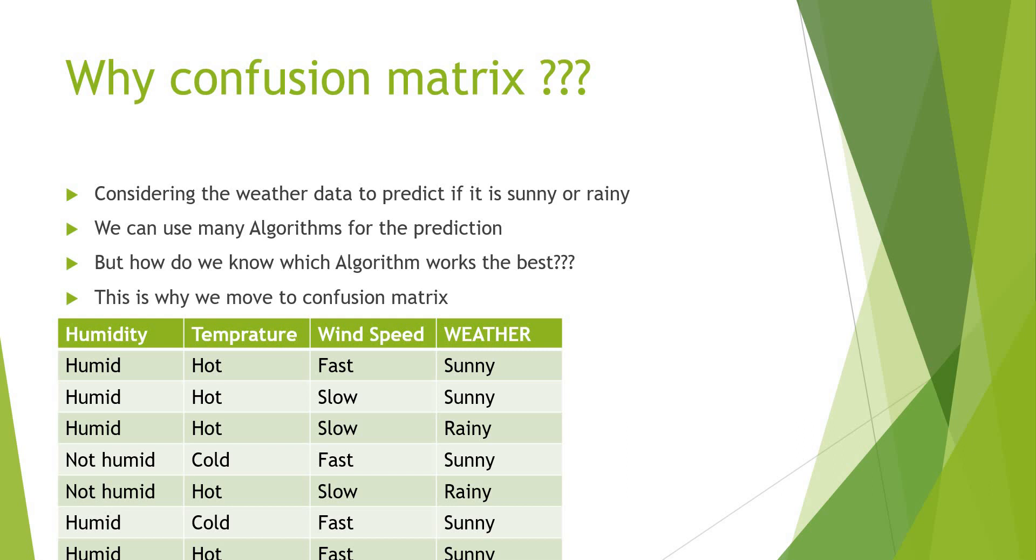We have many machine learning algorithms to predict like logistic, KNN, random forest, etc. But how do we know which algorithm fits our data the best? This is why we move to confusion matrix.